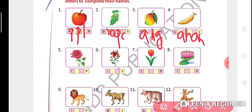Fifth, rose: R-O-S-E. Sixth, lily: L-I-L-Y. Seventh, tulip: T-U-L-I-P. Eighth, lotus: L-O-T-U-S.